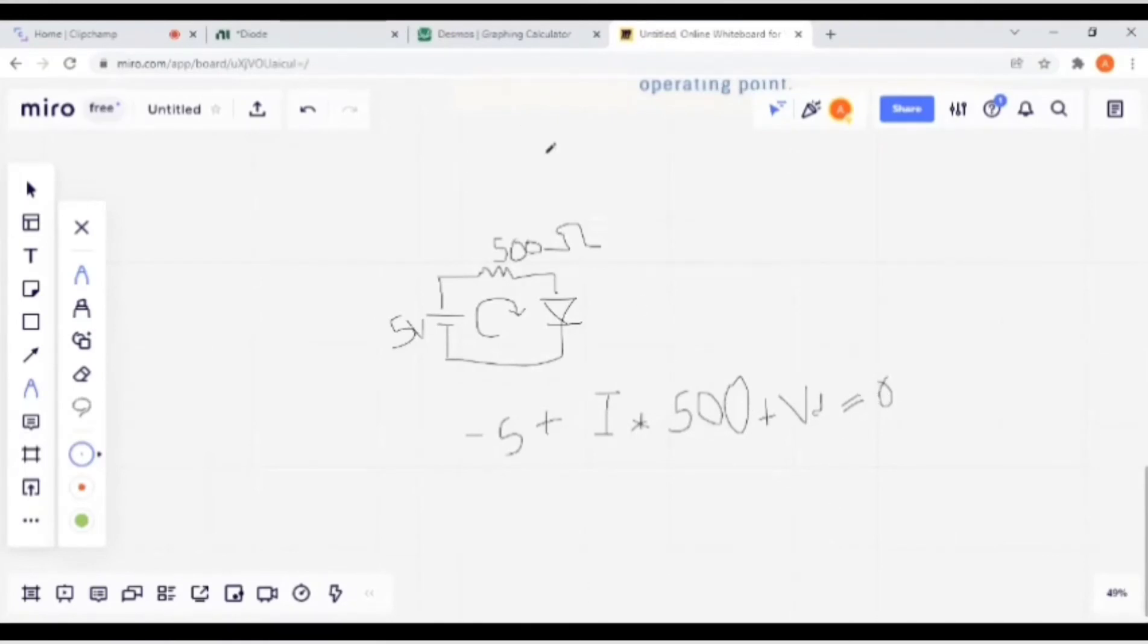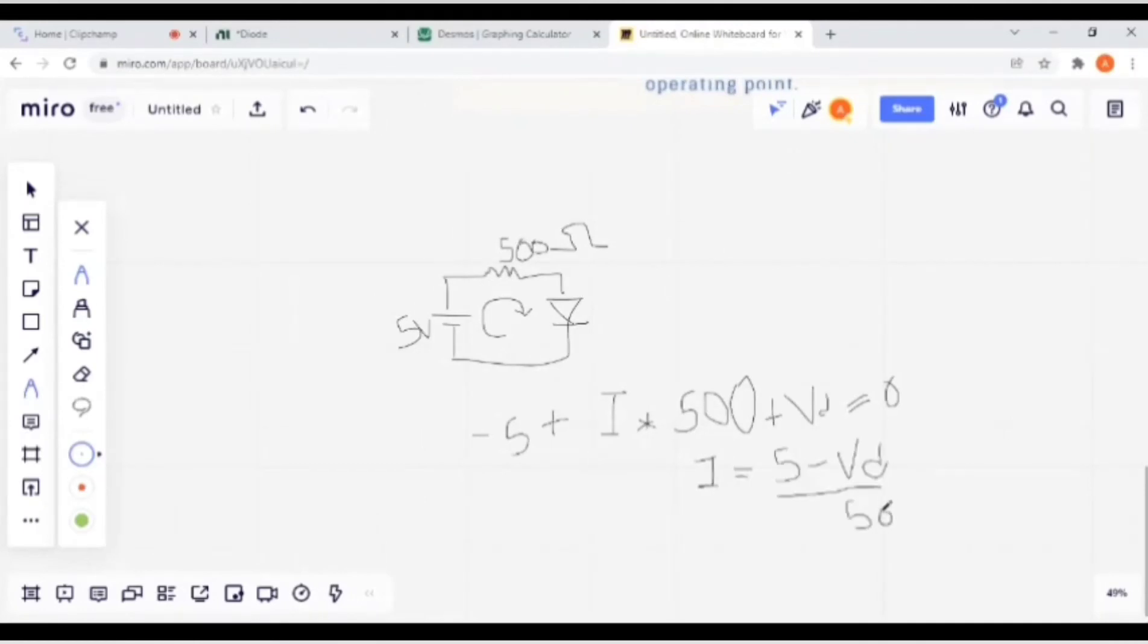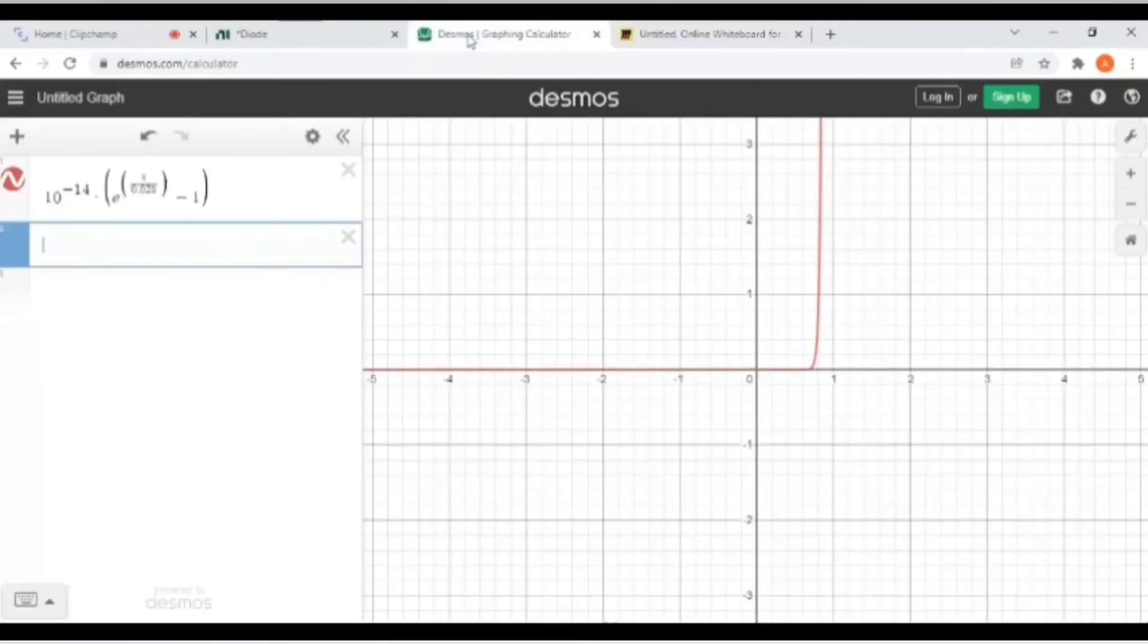This is a straight line equation. Evaluate I. I is a dependent variable, so I am going to plot this equation on this calculator. This is a Desmos graphing calculator. Write equation: 5 minus x, x is for VD, divided by 500. Minus 1 upon 500 is the slope.